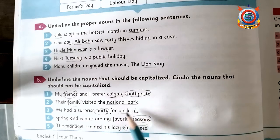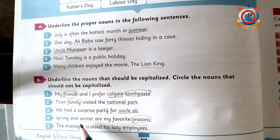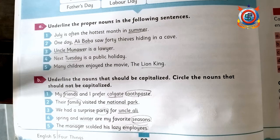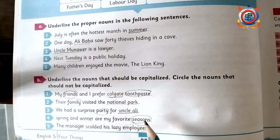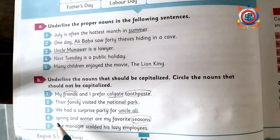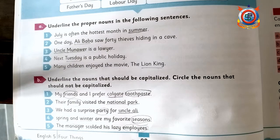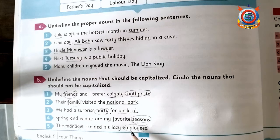Fourth sentence: 'Spring and Winter are my favorite season.' Spring and winter are proper nouns — underline them. Season is a common noun — circle it. Last sentence: 'The manager scolded his lazy employees.' Manager and employees are both common nouns — circle both.